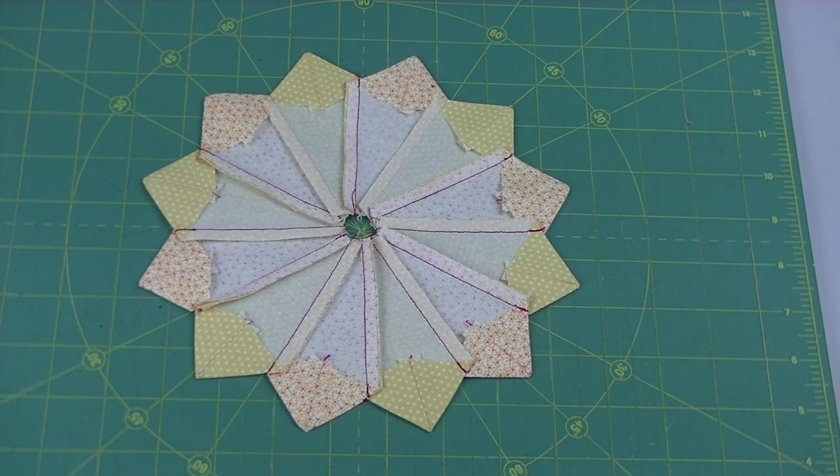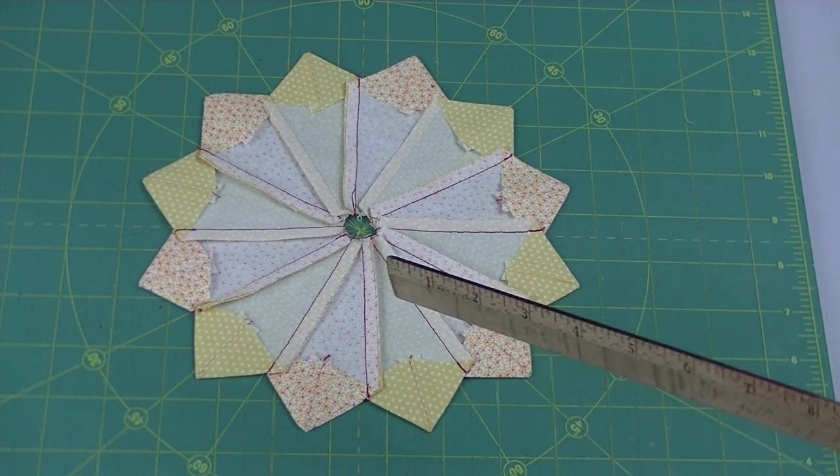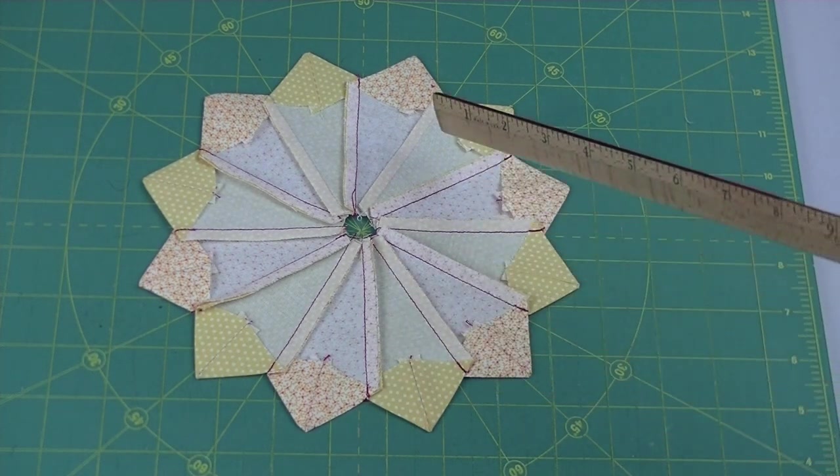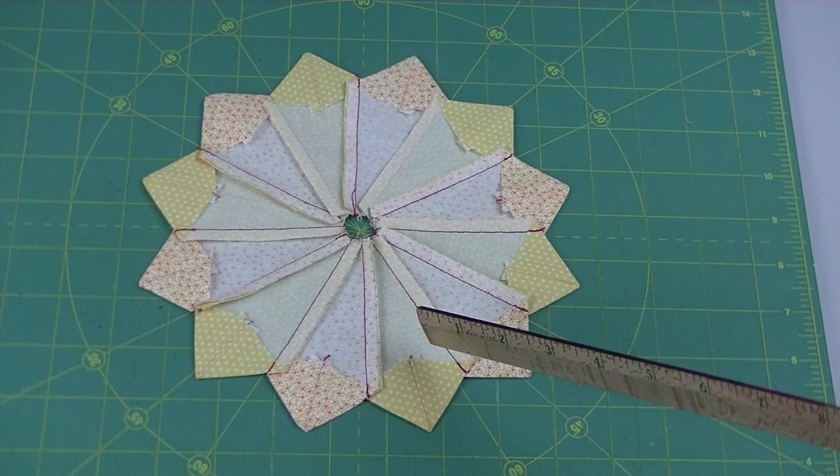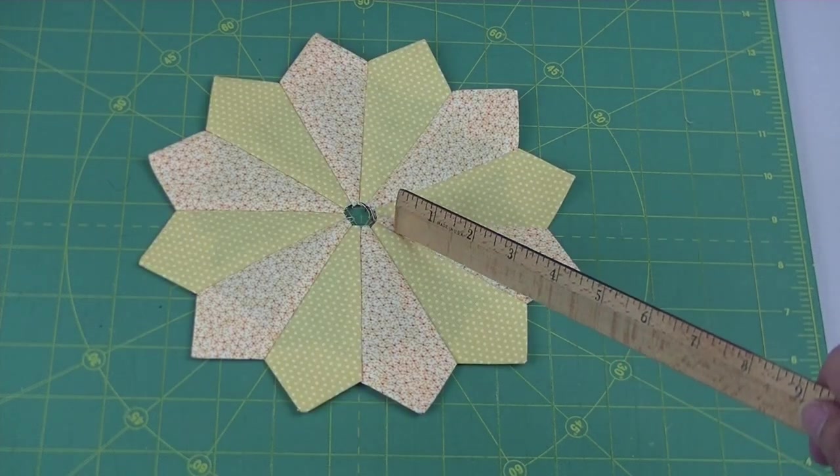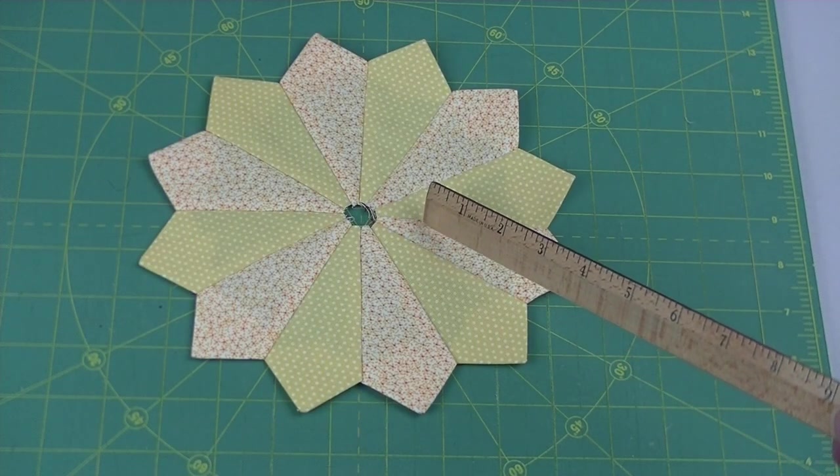When all your petals have been sewn together you want to press. Press the seams all the way around in the same direction. Don't worry that there's a hole in the center. You'll be covering that up with a circle.